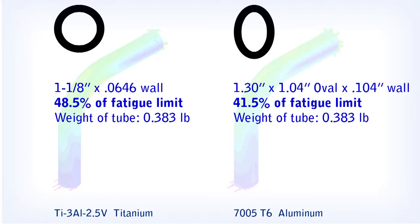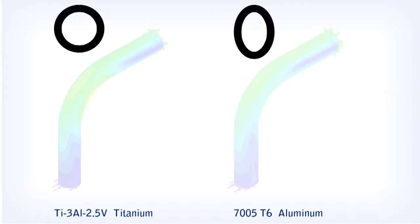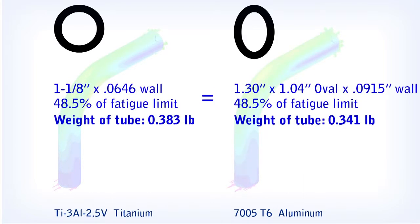As you can see, the aluminum tubing in its oval shape can handle more stress. Also, if we make the fatigue limit ratio the same for both tubes, the round titanium tube will actually weigh 11% more than the aluminum tube. This shows that aluminum tubing in an oval configuration can be engineered to weigh less and therefore will be stronger than titanium frame tubing.